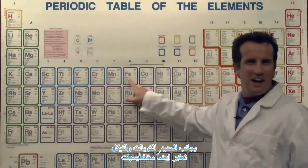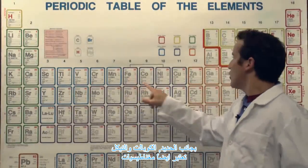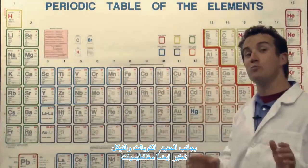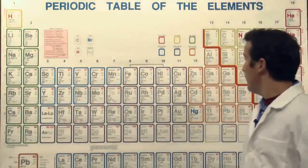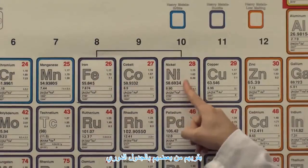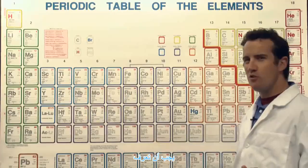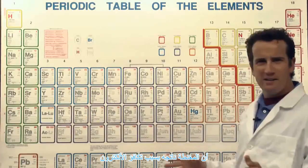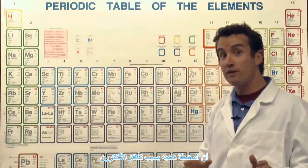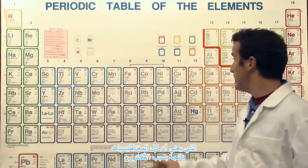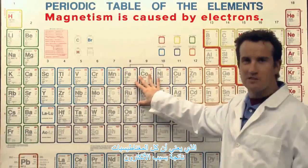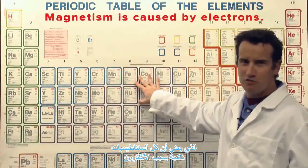Besides iron, cobalt and nickel are also magnetic. Their proximity on the periodic table lets you know that magnetism is a result of electron valence — that is, all magnetism is caused by electrons.